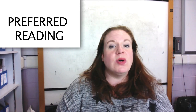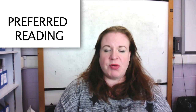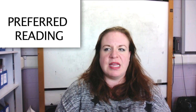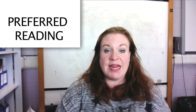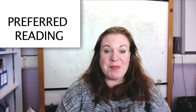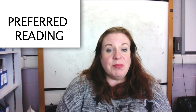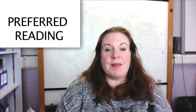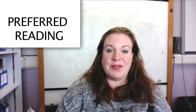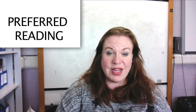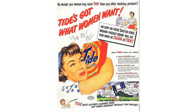So that is what we call the preferred reading. Preferred reading means the particular messages have been received by the audience, accepted by them, and the audience totally gets what the producer wanted them to understand. For example, if an audience in the 1950s were looking at the Tide advert, the preferred reading that the producer intended was that as a woman you should want to keep your family's clothes nice and clean and that you should absolutely buy Tide because it is the best product out there.